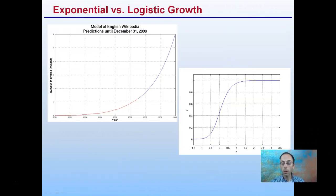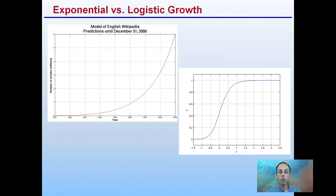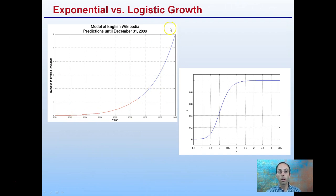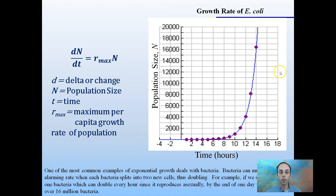There are different types of curves to be familiar with. We have an exponential one, where the population continues to increase at a very rapid, non-linear rate. And a logistic curve, where we see a rapid increase and then a leveling off or plateau that occurs.